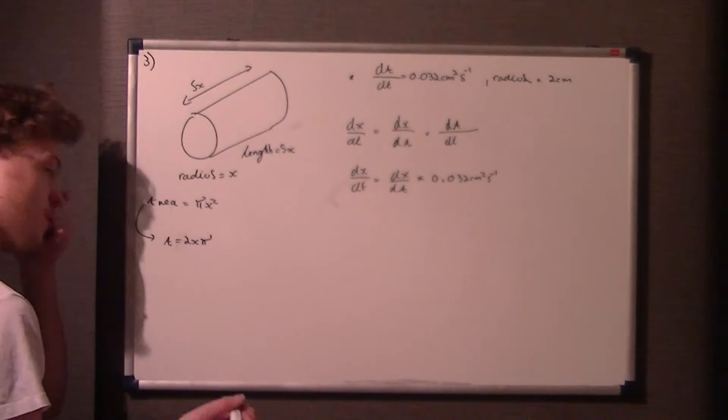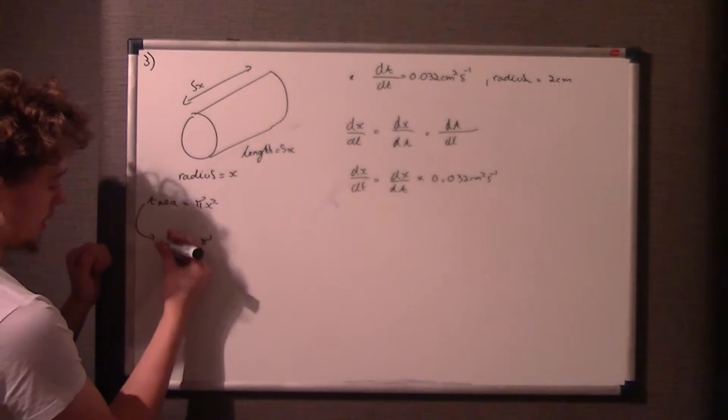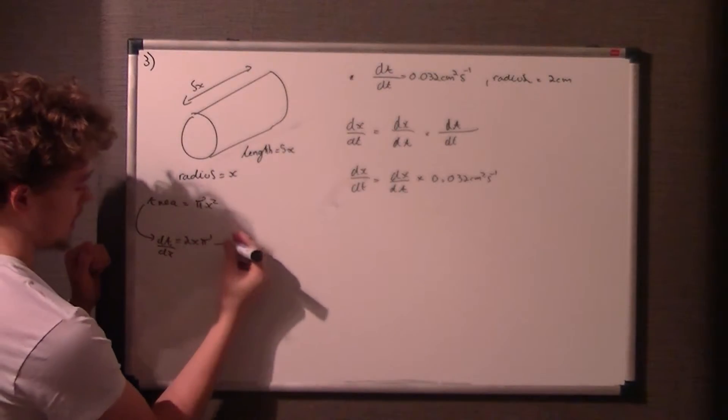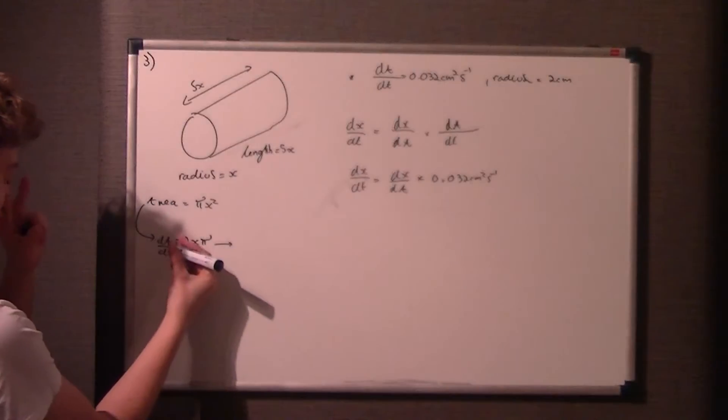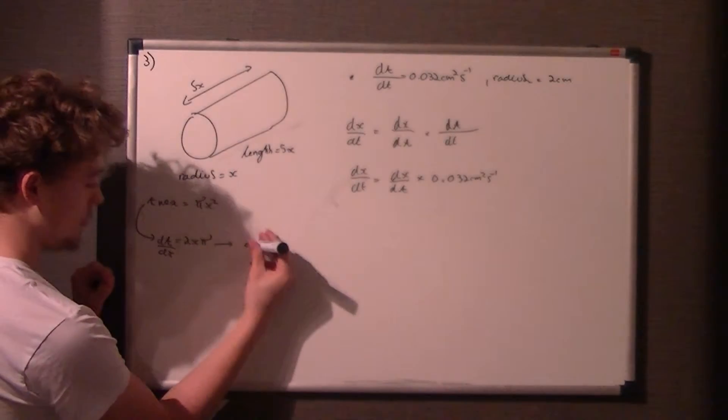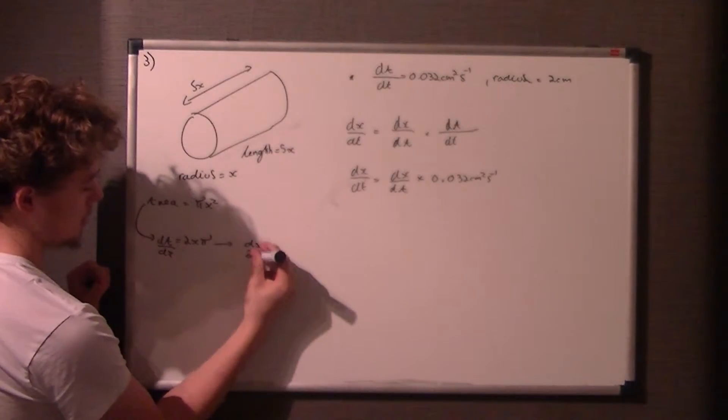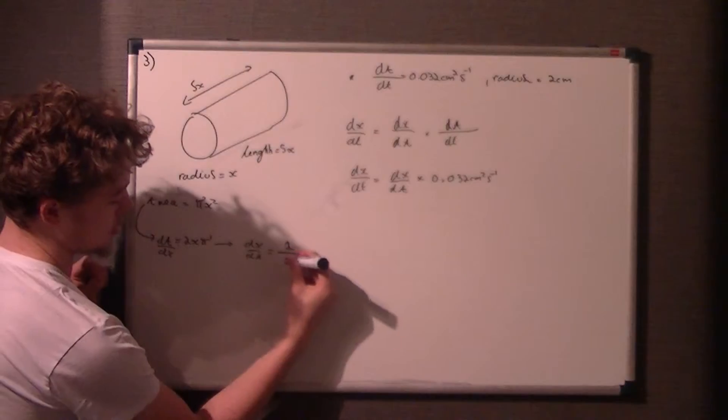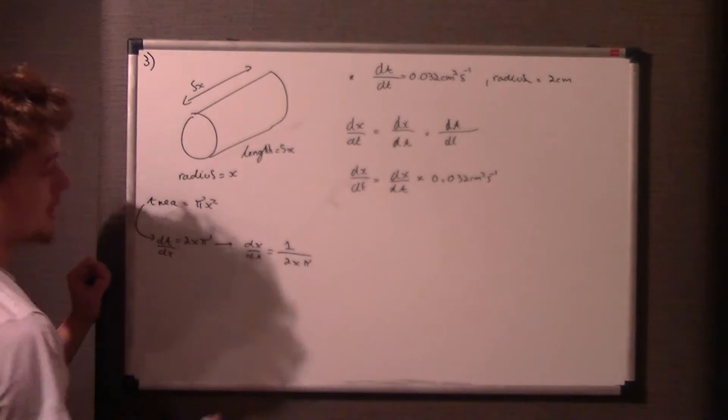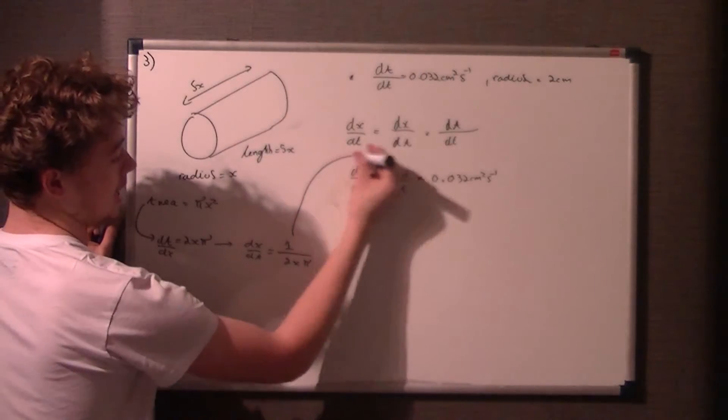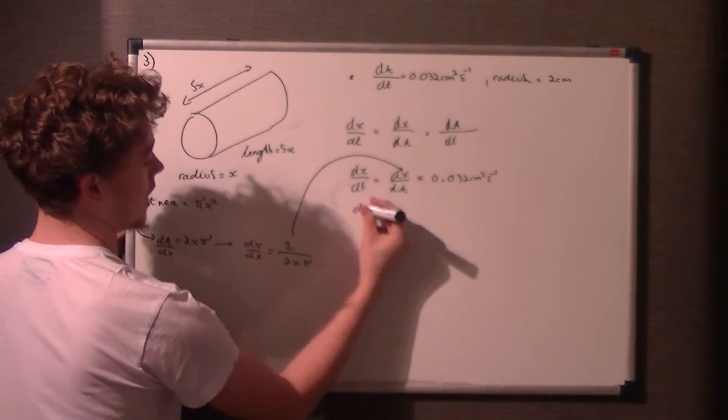So that's da/dx. But we want dx/da. Now, just as if this would say dy/dx and we wanted dx/dy, we'd flip it on both sides. So therefore, dx/da is equal to 1 over this. If we flip the fraction, it's 1 over 2xπ. So therefore, we just sub this value dx/da into the equation here and we can carry on this formula.